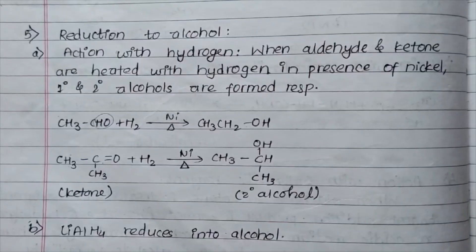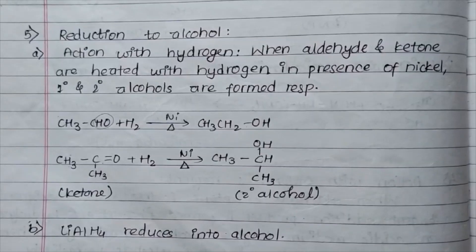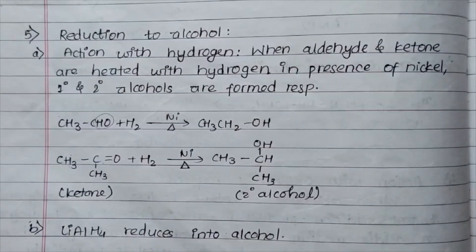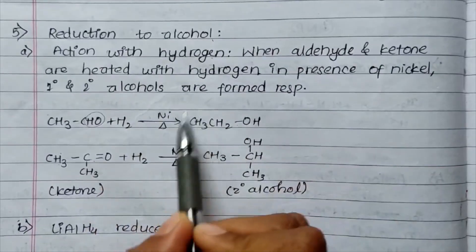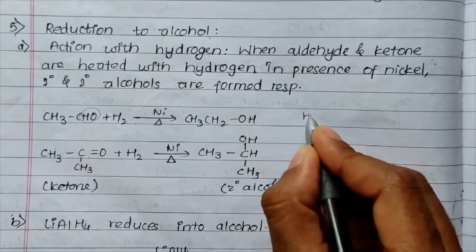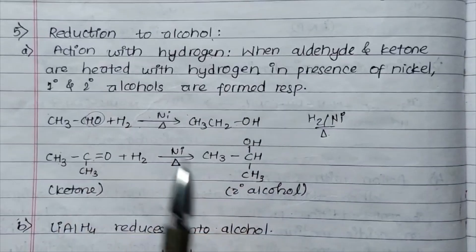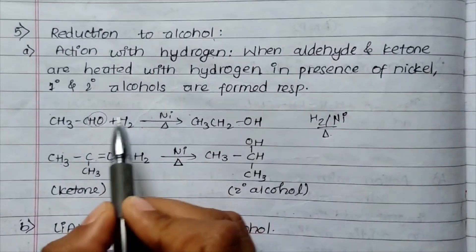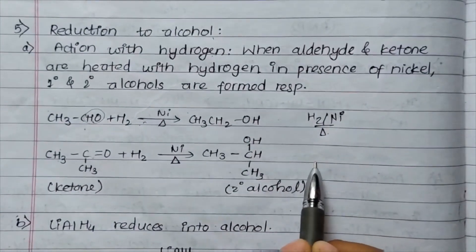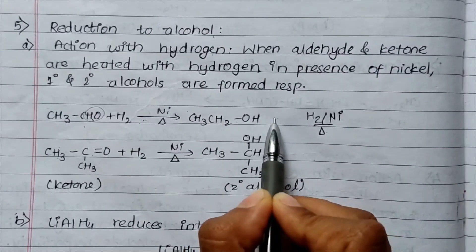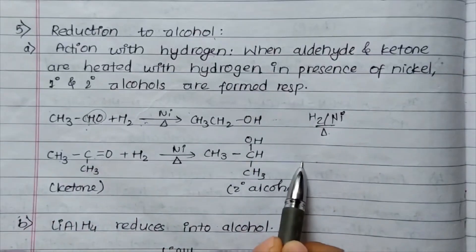I'm going to talk about chemical properties of aldehydes and ketones. The primary alcohol is oxidized to aldehyde, and the secondary alcohol is oxidized to ketone. We need to do oxidation of alcohol. Primary alcohol is oxidized by ketone.